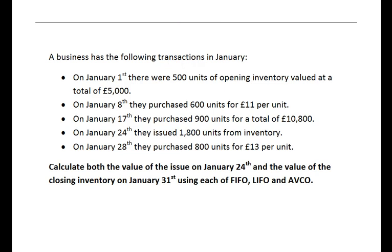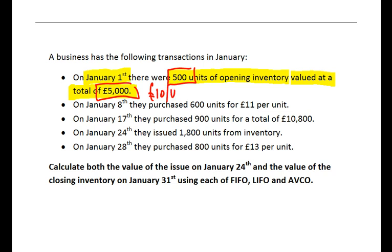Let's have a look at the task we're going to work through in this online lecture. We've got a variety of transactions in January, including from January the 1st, 500 units of opening inventory — units they've got that were perhaps purchased in the previous year, maybe back in December. That 500 units is valued at a total of £5,000. You can work out that £5,000 divided by 500 units gives an average of £10 per unit for the opening inventory.